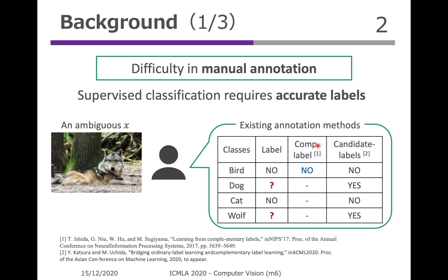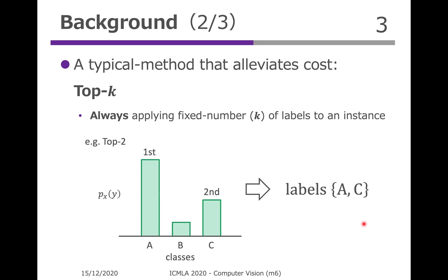In complementary label proposed by Ishida, an annotator selects one incorrect class which does not represent the instance. In addition to that, Katsura generalized the idea and proposed candidate labels, where an annotator selects multiple candidates for one true class. One typical method that alleviates annotation cost is called top-K in this study. In top-K, annotators are required to always select a fixed number of classes as labels for each instance. For top-2, once an annotator sees an instance and builds its own probability distribution unconsciously and instinctively, it takes the largest two values from the distribution and selects the corresponding classes as labels.